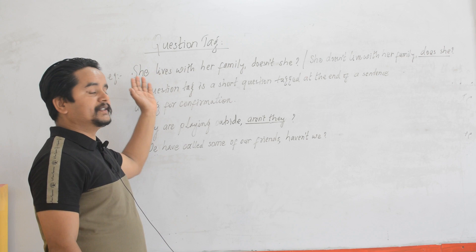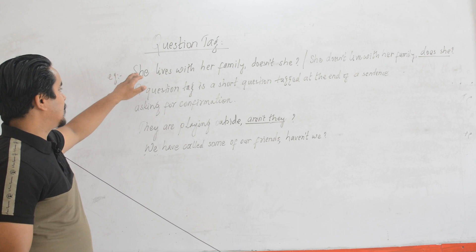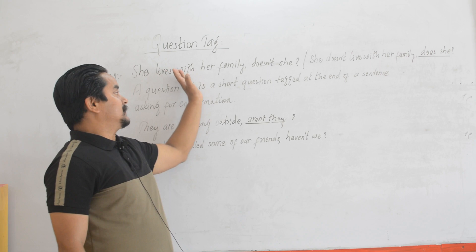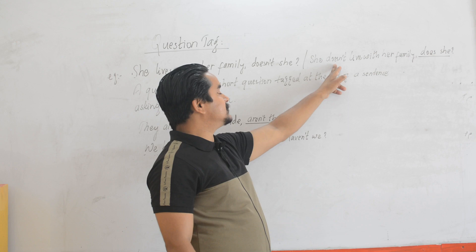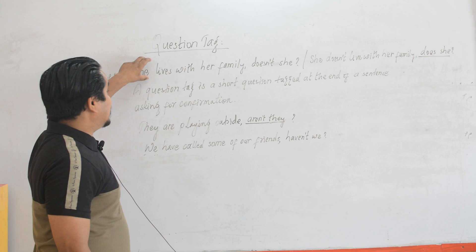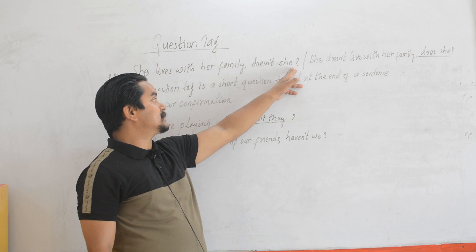I shall show you the example first here. I have written: 'She lives with her family, doesn't she?' and 'She doesn't live with her family, does she?' Now what is the difference we find between these two sentences? If the sentence is affirmative, the question tag should be negative. This is the basic rule. Likewise, if the sentence is negative, the question tag should be affirmative. The sentence and the question tag should be separated with a comma, and you have to insert a question mark at the end.